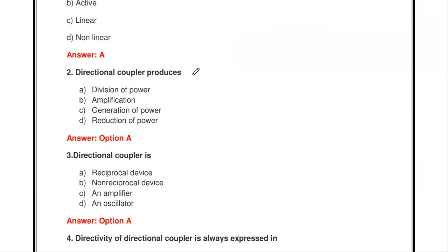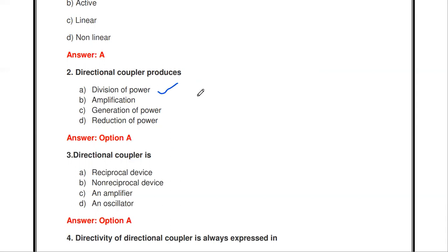Next question: the directional coupler produces blank — division of power, amplification, generation of power, or reduction of power. The directional coupler produces division of power; it is used to divide the power into particular ports.